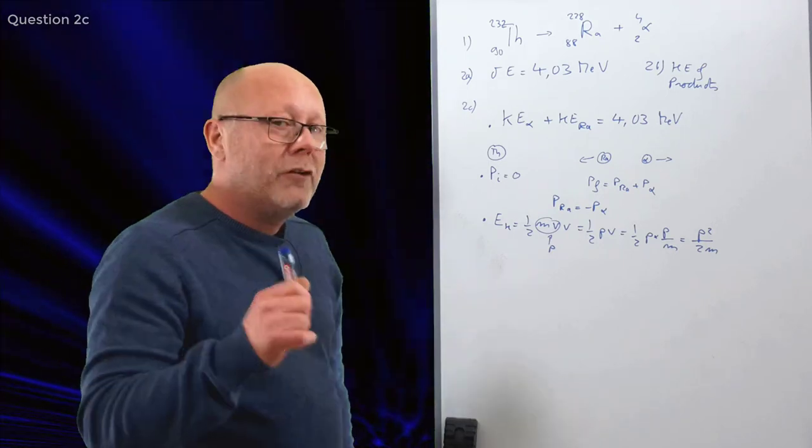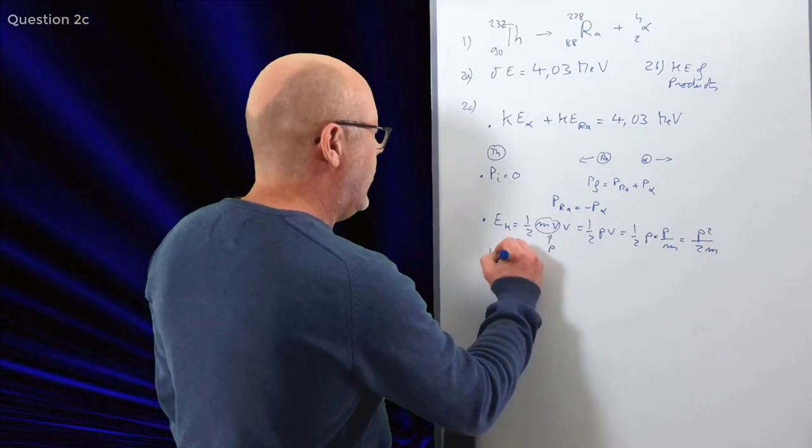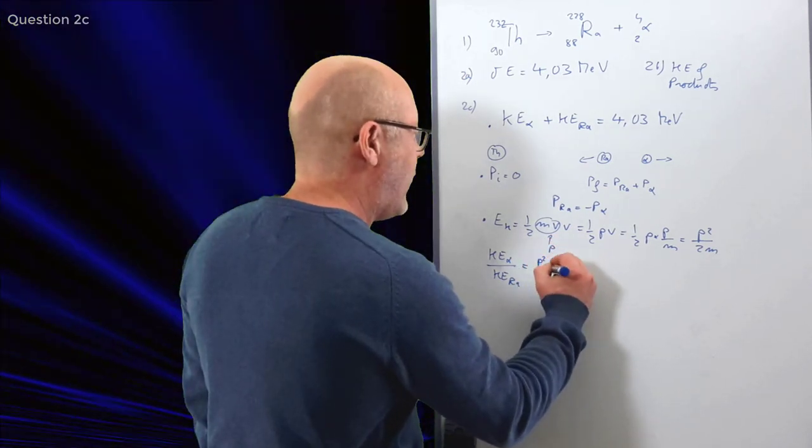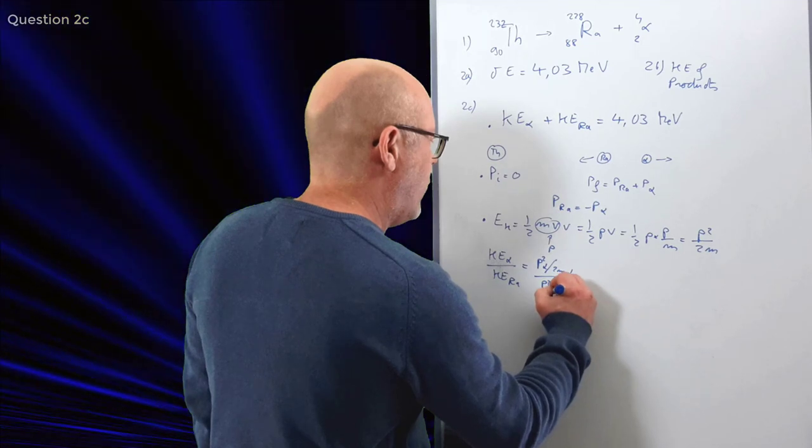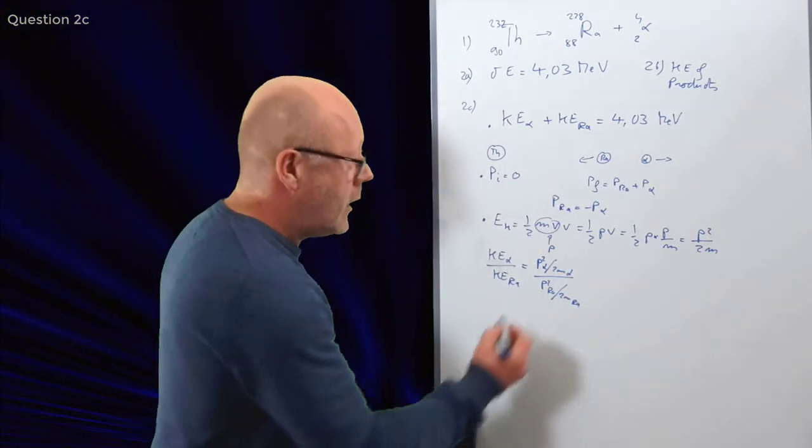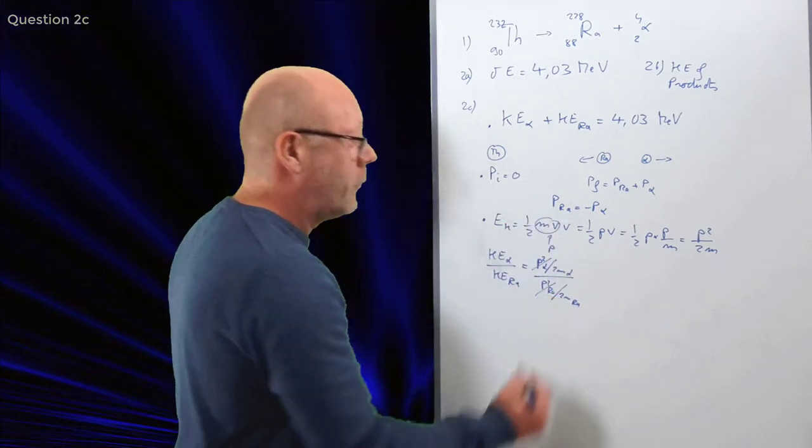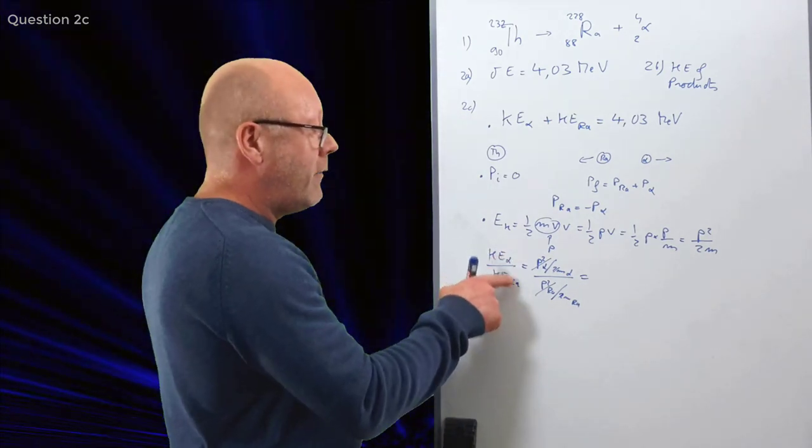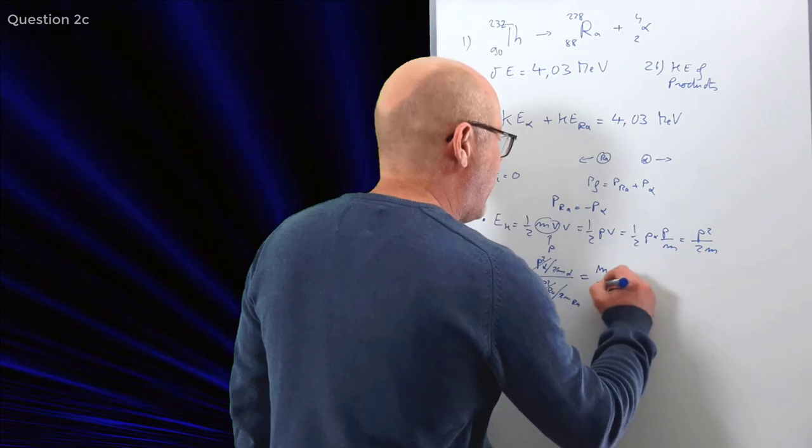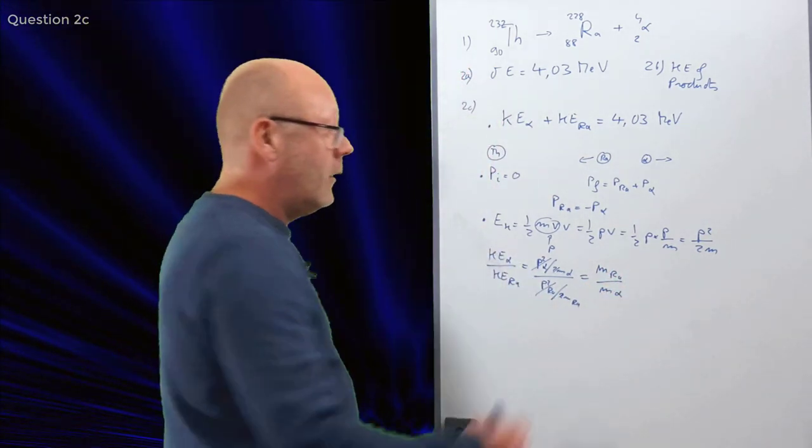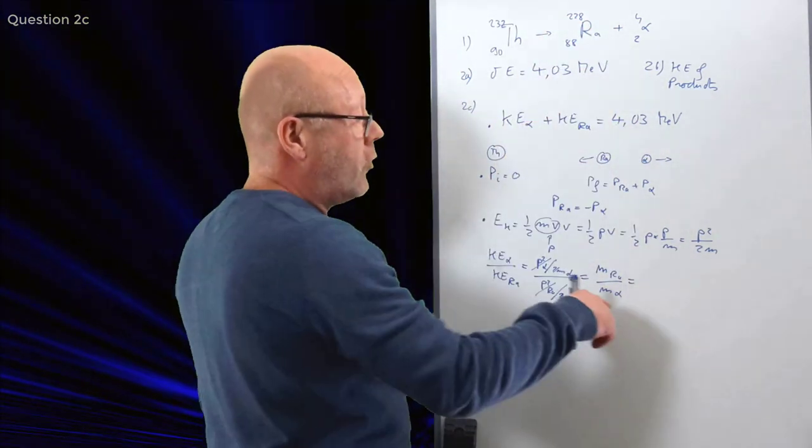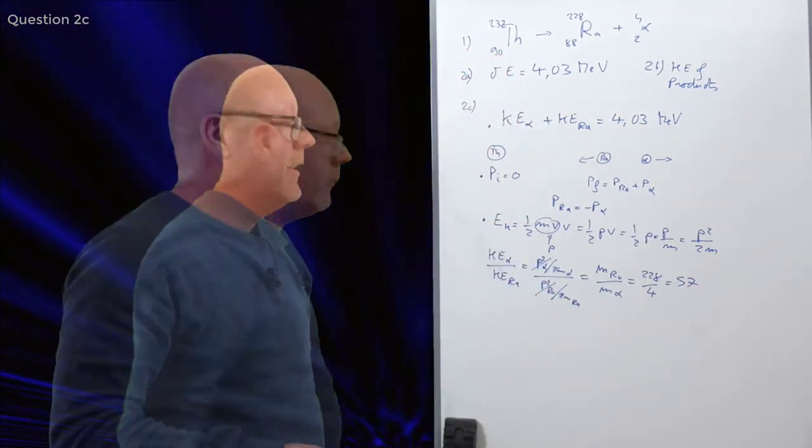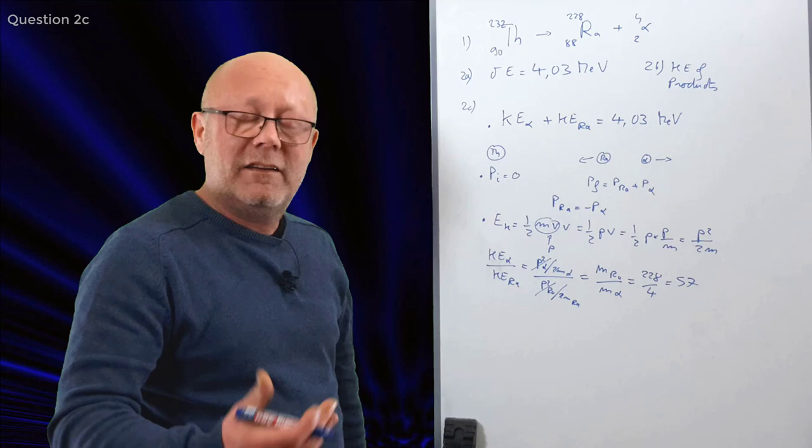Right. So what we'll do now is we'll try to find the ratio of the kinetic energies. So I write KE alpha on KE radon, for example. That's going to be equal to P squared alpha over 2M alpha divided by P squared radon over 2M radon. Now, I can see that because the momenta are the same in magnitude, I can cancel them. Right. As well as the 2s here. So that gives me that the ratio of the kinetic energy of alpha on radon is equal to the ratio of the masses of radon on alpha. You just flip the masses. Radon is 228 in mass. I'm just going to use the main numbers 228 and 4. That's 57. So basically, the alpha particle is taking most of all the energy. Yes, it's the lightest.